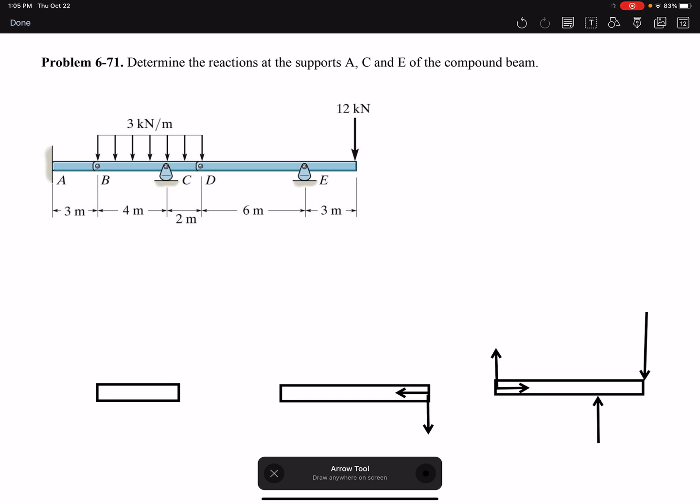Then I have my reaction at C. Again, it's a rocker, so it only has reaction in Y direction. At B I have BX and BY. And the opposite of that would be on my beam AB.